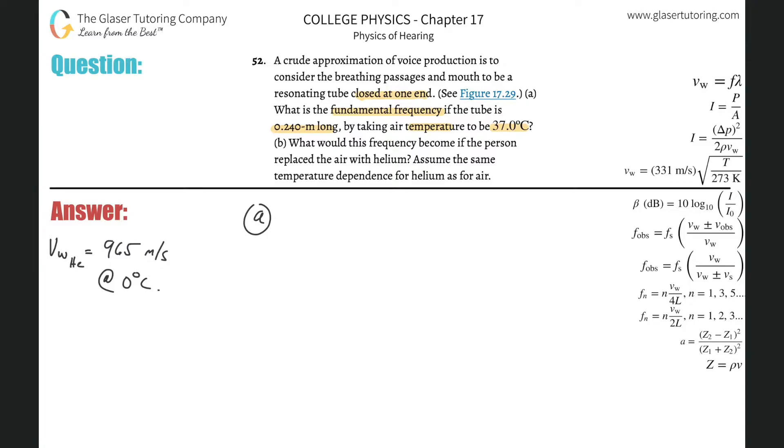All right, check out number 42, went through a general overview of the concepts here. So we have a tube closed at one end, so we're going to be using the formula that the frequency of the nth harmonic will be equal to the nth harmonic multiplied by the velocity of the sound in that particular medium, divided by four times the length of the tube where the harmonics can be the first, the third, the fifth, the seventh, the odd values.